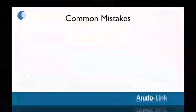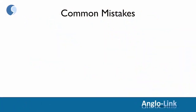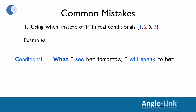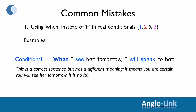Let's look at some common mistakes. Common mistake number one is using 'when' instead of 'if' in real conditionals one, two, and three. Remember that you can use 'when' instead of 'if' in conditional zero. In conditional one, 'When I see her tomorrow, I will speak to her' is actually a correct sentence, but it has a different meaning — it means you are certain you will see her tomorrow. It's no longer a conditional sentence.